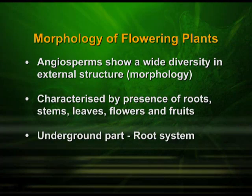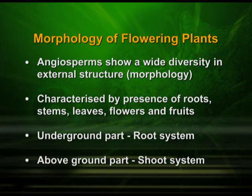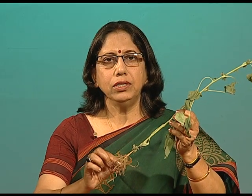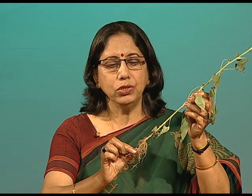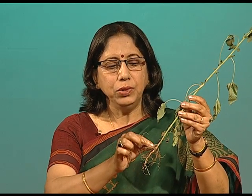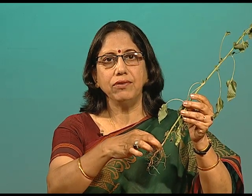If we have a look at the flowering plant, we can see that they have the underground portion — the root — and the portion above the soil, which is the shoot system. The radicle, after the germination of a seed, comes out. This radicle is actually the primary root, which we find in case of a dicot plant. This primary root later on develops the secondary root and tertiary roots.